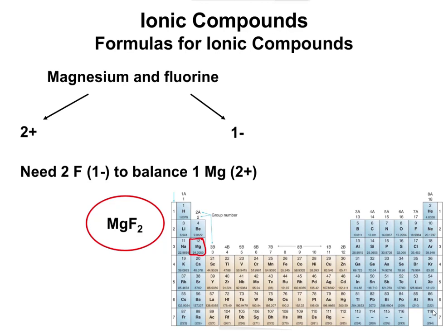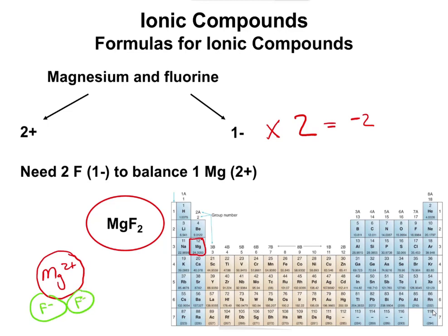Now that we know magnesium has a plus two charge and fluorine has a negative one charge, how do we balance that? We're going to need two fluorines — two times negative one equals negative two, which balances out the positive two. So we need two fluorines to balance out the magnesium. We write that as MgF₂, where the subscript two tells us there are two fluorine ions. You can think of it as one Mg²⁺ associated with two F⁻ ions.